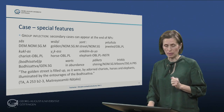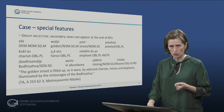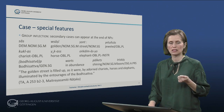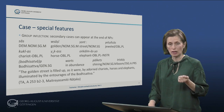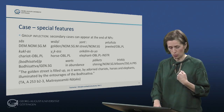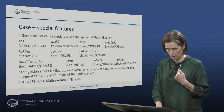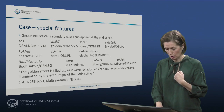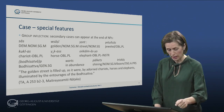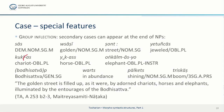Another special feature of Tocharian is group inflection. It means that secondary cases normally appear only once, at the end of a noun phrase. We have a very nice example here from the Maitreyasamiti-Nātaka: we have 'chariots' in the oblique plural, 'horses' in the oblique plural, 'elephants' in the oblique plural — and the instrumental case affix occurs only once, at the end of the entire phrase.